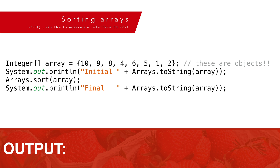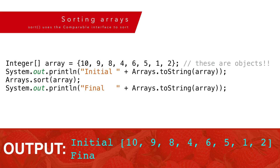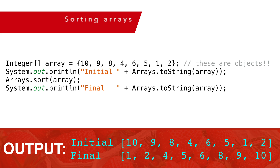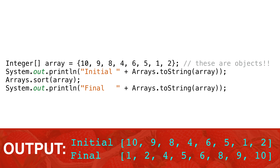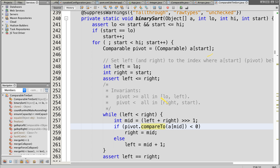Here's how we'd sort an array of integers: define our array, then use the Arrays class and call the sort method. Our array is now sorted. The sort method just takes an array of objects, so how does it know how to sort our integers? Well, deep in the Arrays class, it's using the compareTo method.